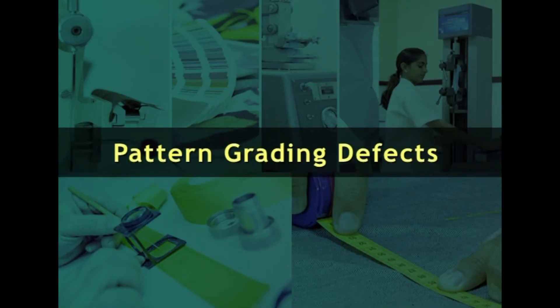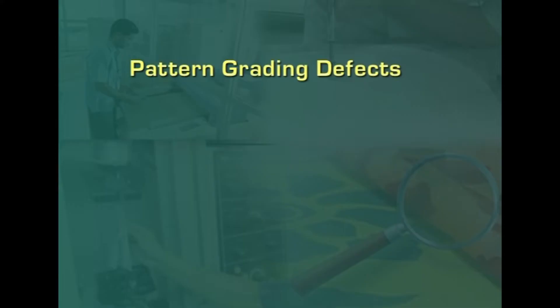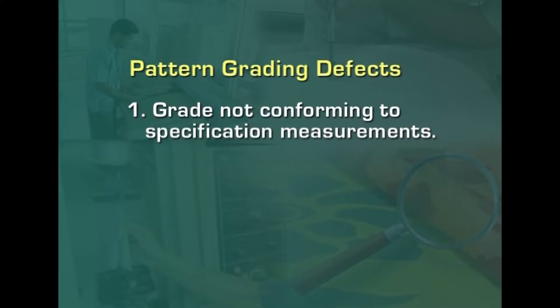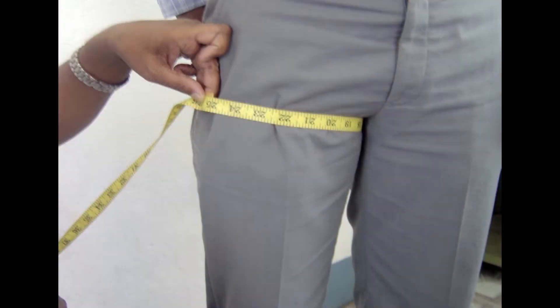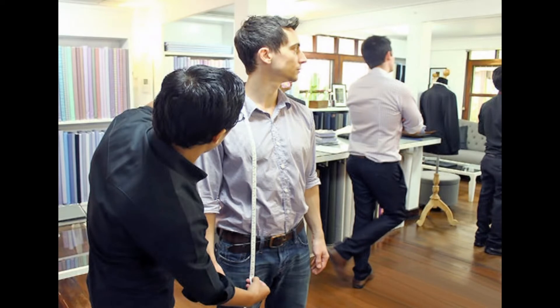There are also pattern grading defects. Grading defects are generally not found in branded garments as the fit of the garment is affected. In industries where quality is not very important, these defects are possible — for example, a garment made for size 34 may fit size 32. The grade not conforming to specification measurements is also a defect. Sometimes measurements are given by the party for whom they are made, and the garment should be in line with those measurements, otherwise it becomes a defect.